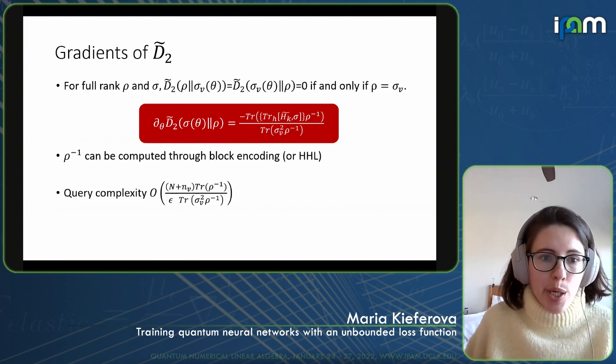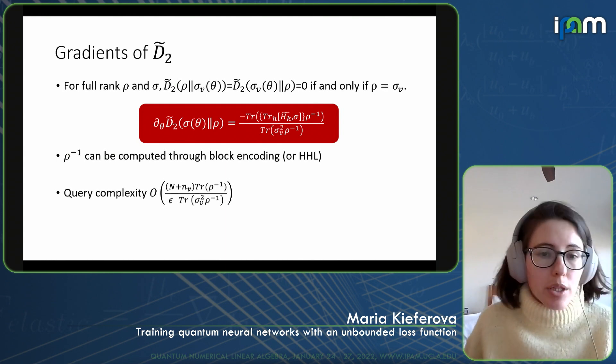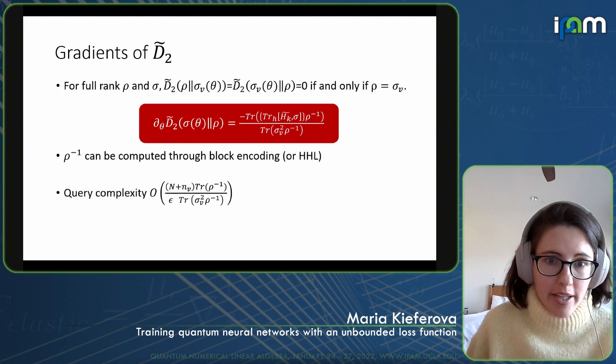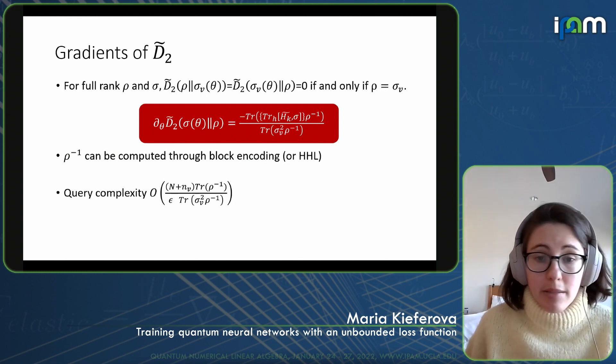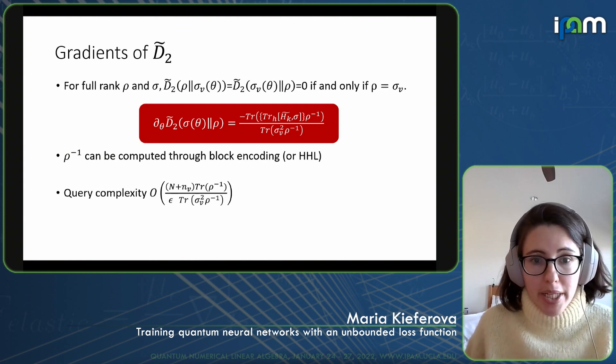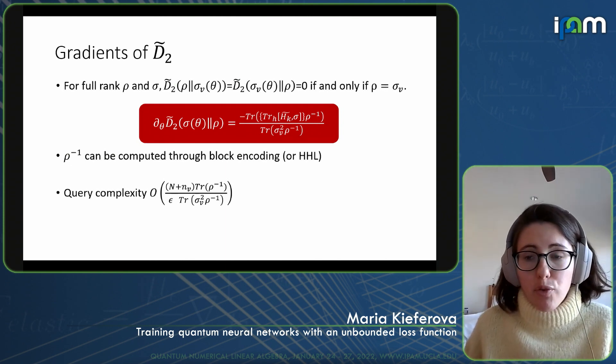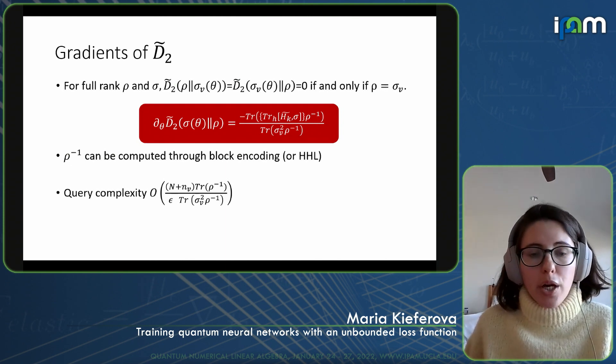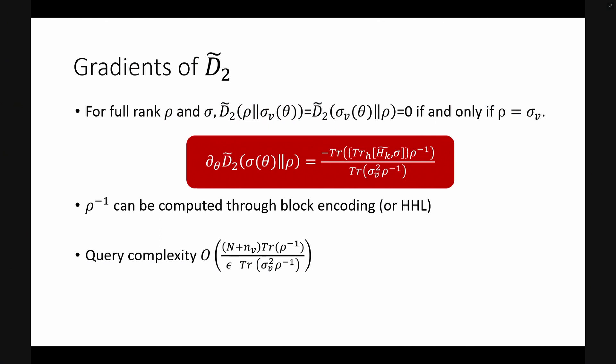Similarly to KL divergence, we won't be computing the Rényi divergence directly — we will only be looking at the gradient. As a divergence, maximal quantum Rényi divergence is not symmetric, but if both density matrices are full rank, we know that it doesn't matter which direction we take it — once we reach zero divergence, this can happen only if our model and our data are the same. For some computational reasons, in some cases we might switch the order of data and model in the mathematical expression for D2.